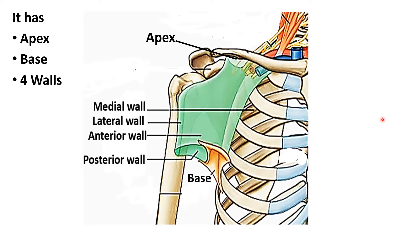Let us look at the boundaries. As mentioned, it is a four-sided pyramid. It has an apex directed upwards, a base directed downwards, and four walls: the anterior wall, the medial wall, the lateral wall, and the posterior wall. You can feel the walls of the axilla by slightly abducting your arm. The base is the skin extending from the thoracic region to the arm, and just above that you can feel the anterior wall where you can also feel the pectoralis major muscle. Posteriorly is the scapular region, laterally the humerus, and medially the thoracic wall.